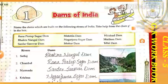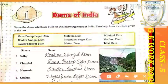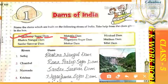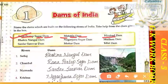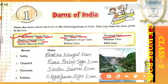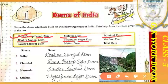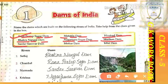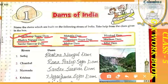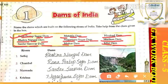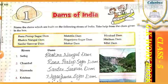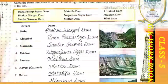Let's start reading the dam names from the clue box: Rana Pratap Sagar Dam, Matatila Dam, Hirakud Dam, Bhakra Nangal Dam, Nagarjun Sagar Dam, Maithon Dam, Sardar Sarovar Dam, and Tehri Dam. So these are the dam names associated with the rivers.